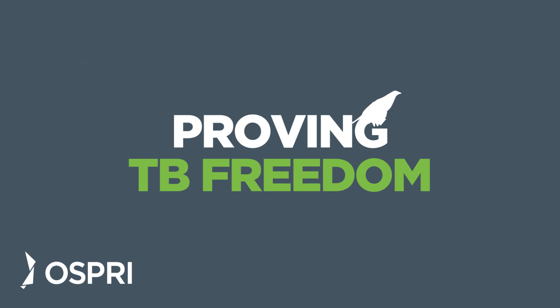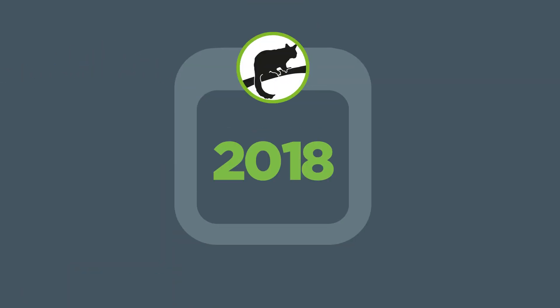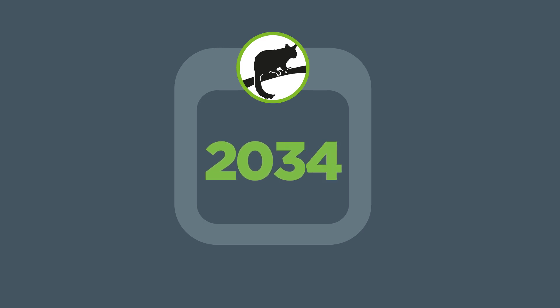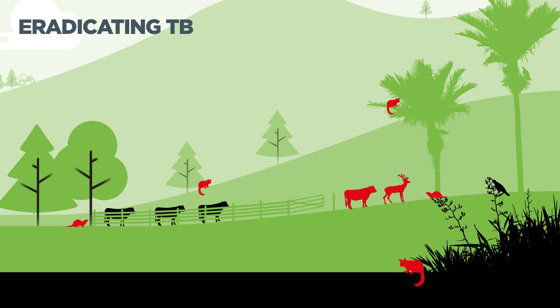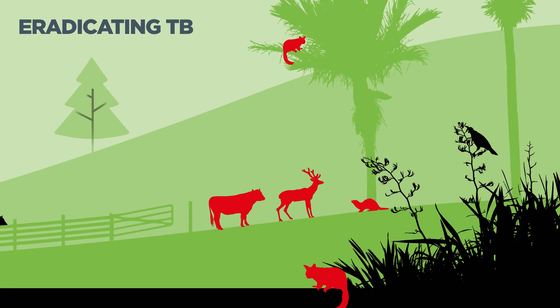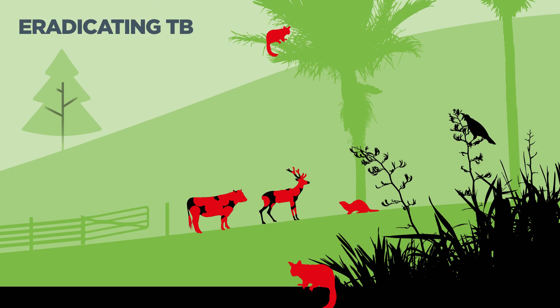The TB Free program aims for TB freedom in possums by 2040. TB freedom requires proof the disease has been removed. And while proving something isn't there is almost impossible, the Proof of Freedom model gives confidence that an area is free from TB.